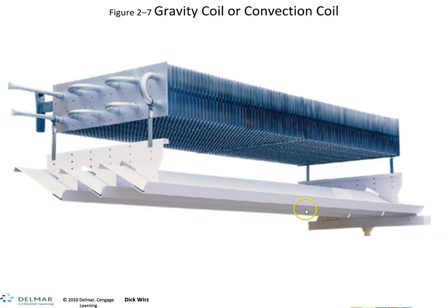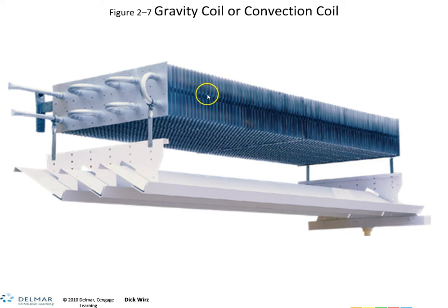A gravity or convection coil is a regular refrigeration coil for a cooler. You'll notice the fin spacing here is quite a bit wider than you're used to seeing. There's no fan whatsoever — the coil begins to cool down, cold air falls down into the cooler. The condensation pans here catch the drip when the coil starts to drip, and drain it out. You don't see these very often.